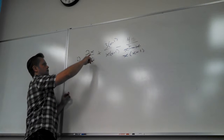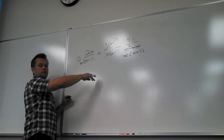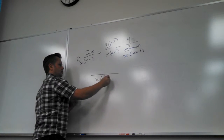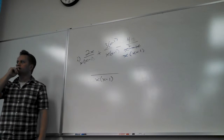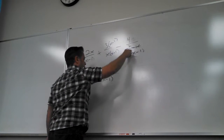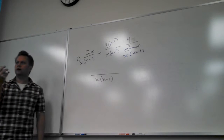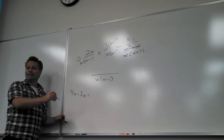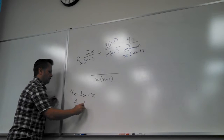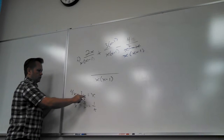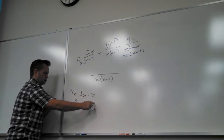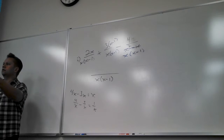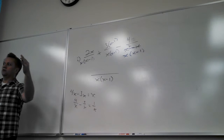Now I can add them — they all have the same LCD. So what's going to be on the bottom? X times X minus one. Not three of these or something weird. Four over X minus three over X equals one over X. Four of these minus three of these is one of these — it's just like terms. That's why we have to make like denominators, so that they become like terms.